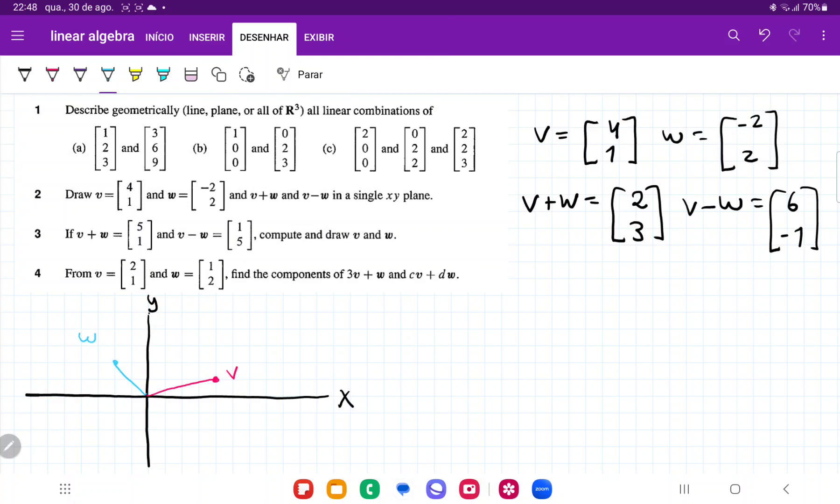Let's see, we have v plus w, which is positive 2 in the x and then 3 in the y, so here. And that is going to give us v plus w.